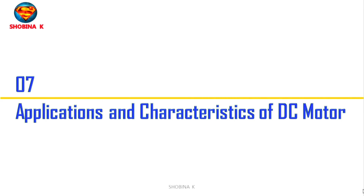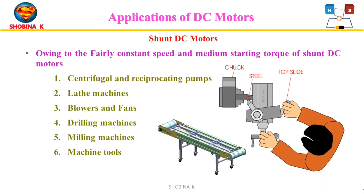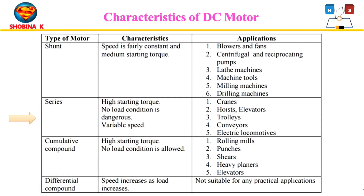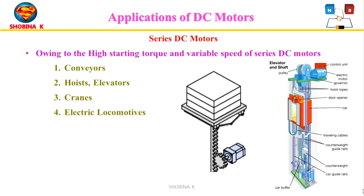Shunt motors are normally constant speed, with a starting torque limited to nearly 200% of commutation. Speed control is done by decreasing the armature voltage. Shunt motors are used for constant speed applications like lathe machines, fans and blowers, woodworking machines, printing machines, and centrifugal pumps. DC series motors have variable speed with a starting torque that can reach up to 500%, with widely variable speed regulation at no load. Speed control is done using the series resistance method. Series motors are suitable for applications requiring high starting torque and variable speed, including electrical cranes, trolley cars, and electric locomotives.